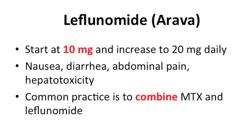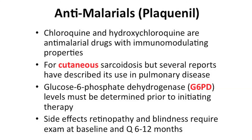Another drug we sometimes use is Arava (leflunomide) — kind of like the brother of methotrexate. We usually start at a 10 milligram dose, and it can cause diarrhea and abdominal pain. If the patient has a lot of skin lesions, we think about using Plaquenil (hydroxychloroquine), which we use especially in lupus patients with skin lesions and in our sarcoid patients. A key pearl for board exams: consider checking a G6PD level, because this drug is known to cause hemolysis.